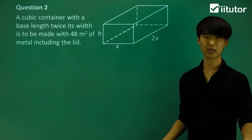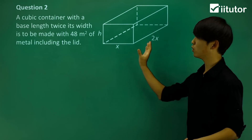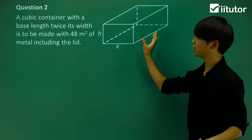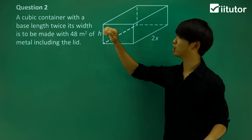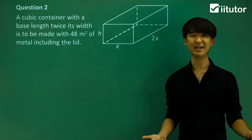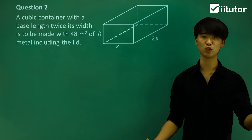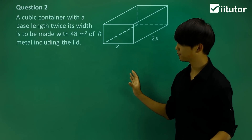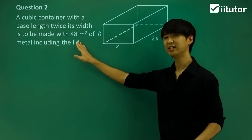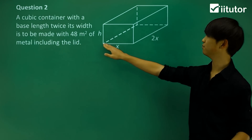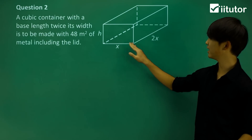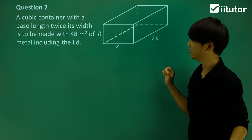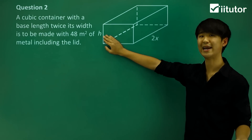Now looking at question 2, we have a cubic container whose base length is twice its width, made from 48 square meters of metal including the lid. The base width is x, the length is 2x, and the height is h. The total surface area of this container is 48 square meters.